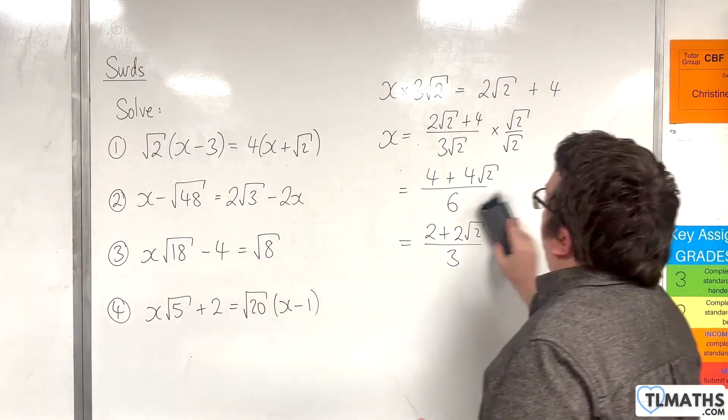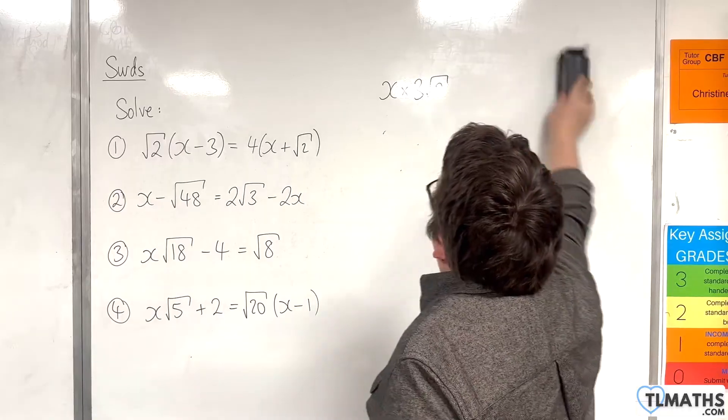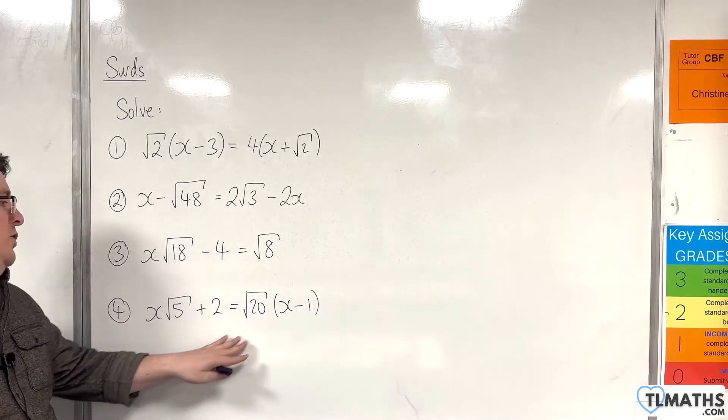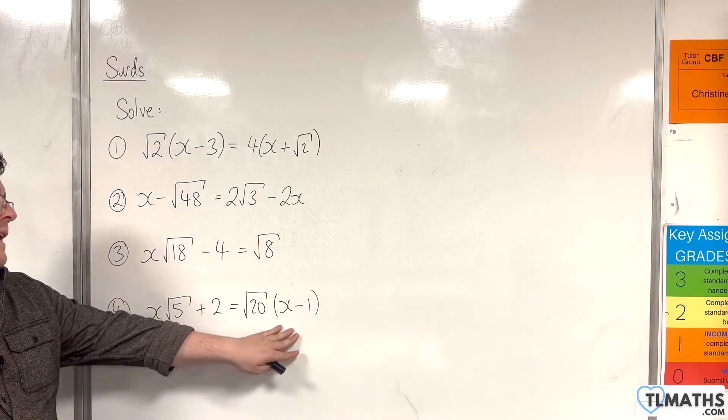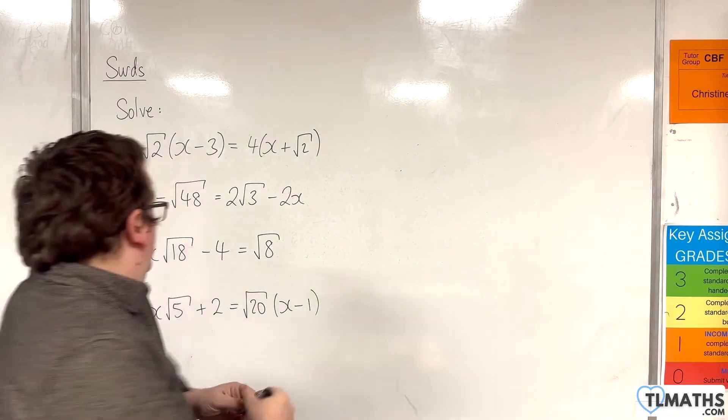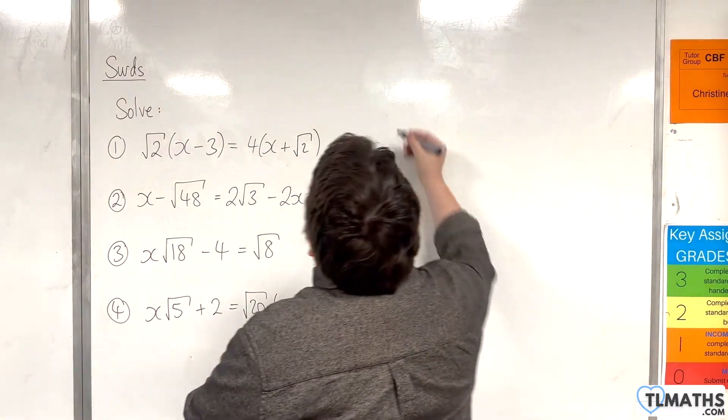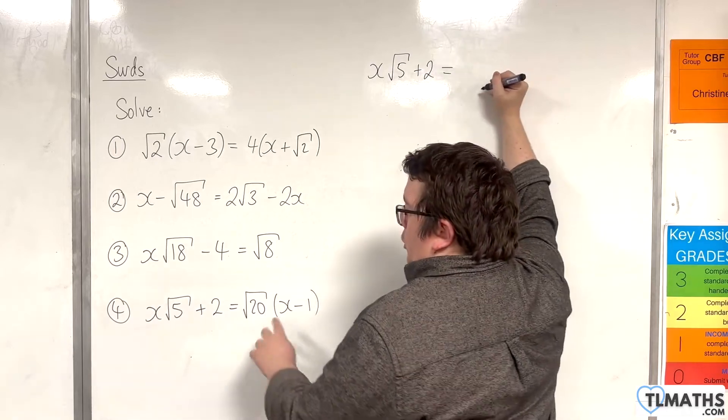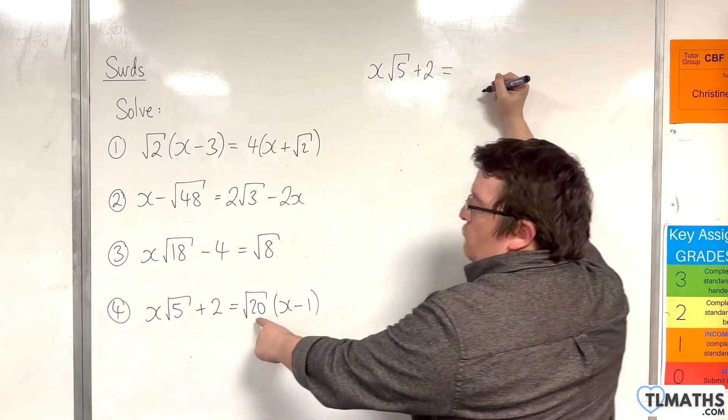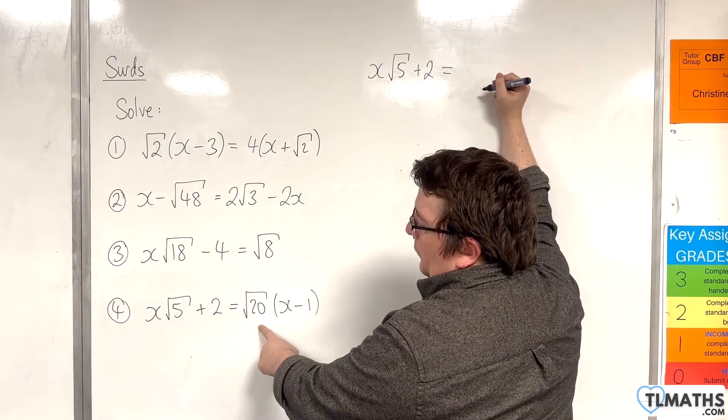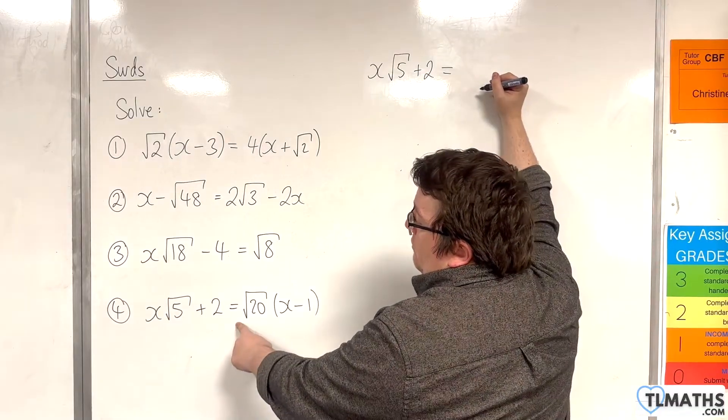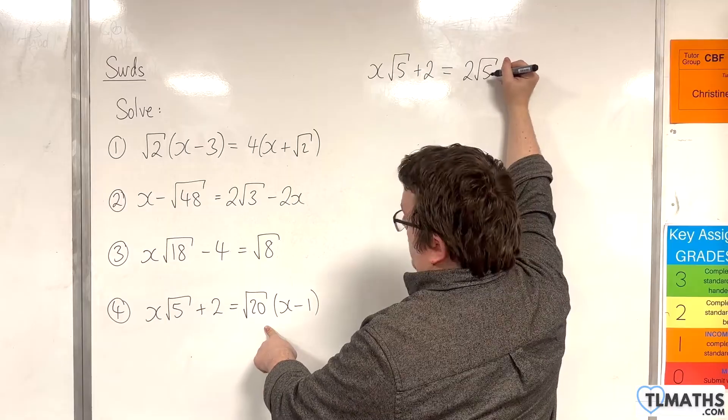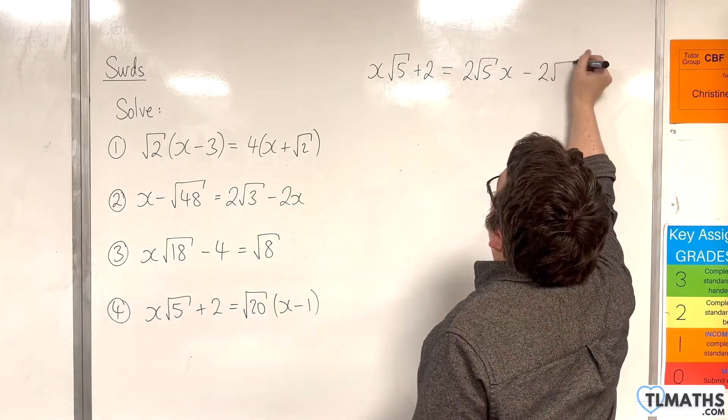Okay. Last one. We have x root 5 plus 2 equals root 20, x take away 1. So let's expand that bracket out. We'll have x root 5 plus 2 on the left-hand side. On the right-hand side, I'm also going to write root 20, because 20 is 4 times 5. So I can write root 20 as 2 root 5. So 2 root 5x take away 2 root 5.